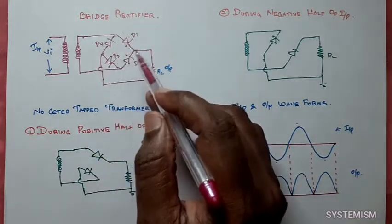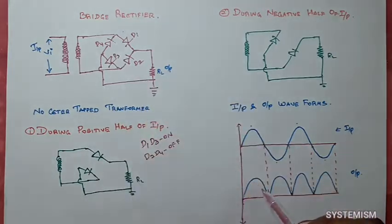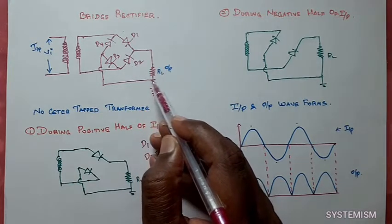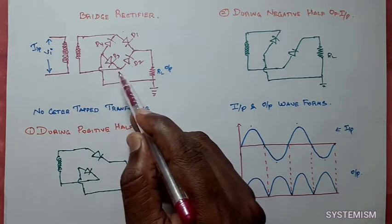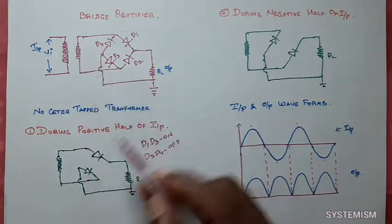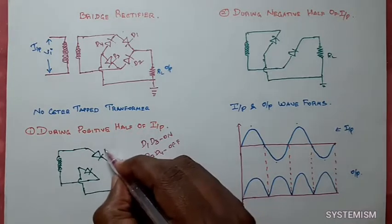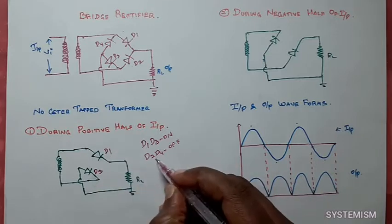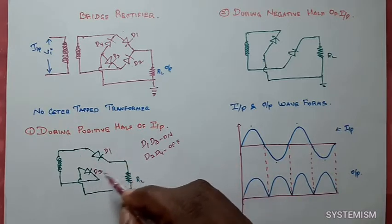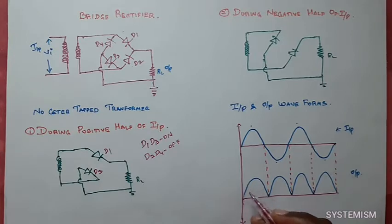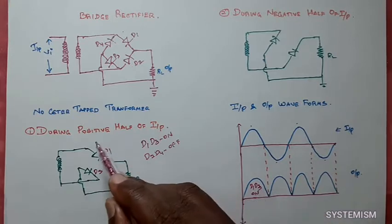Now, how does this circuit become completely closed for creating this output? The signal will come in this direction and this diode is ON, so it will go through this direction and then move through this resistor, then it comes like this, moves through D3 diode, and gets connected with this circuit — this is the complete closed circuit for the movement of current. This is why you are getting the output during positive half cycle. D1 and D3 are ON; other diodes are OFF. Due to that, we have a proper closed circuit by which we get this output.